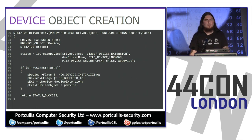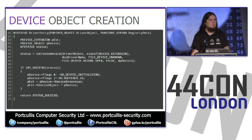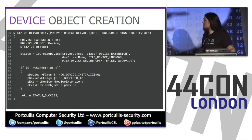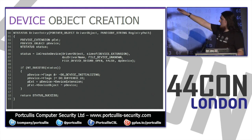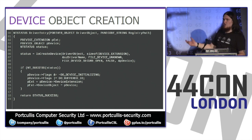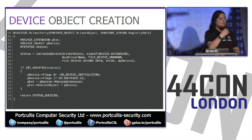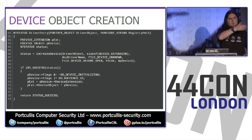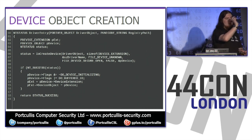We're calling IoCreateDevice to create one of these devices. The device name string is defined elsewhere. What it does is create an object that user space can see — in kernel space you're creating a reference to your driver that user space can then open a handle to and start sending things to.